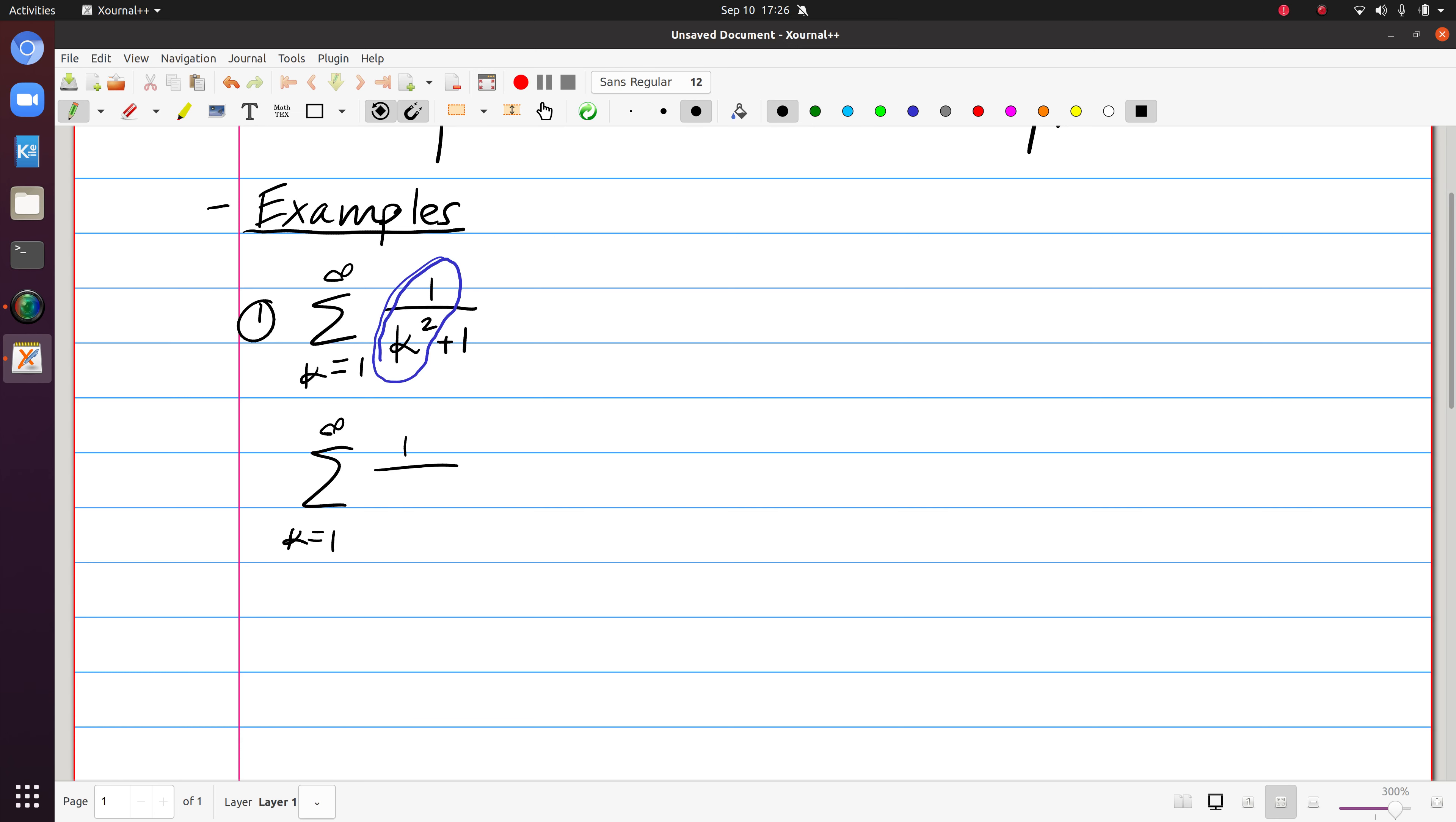So this is the series of interest and it almost looks like this series. Then we need to decide what the relationship is here. So notice that the denominator k-squared plus 1 is larger than the denominator k-squared.